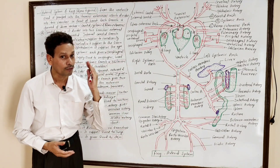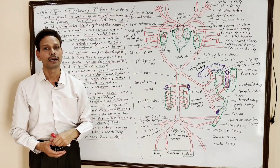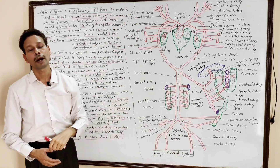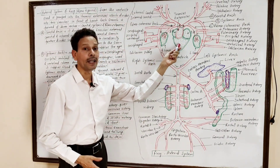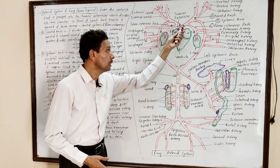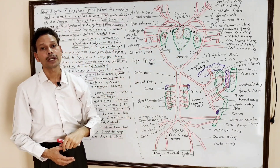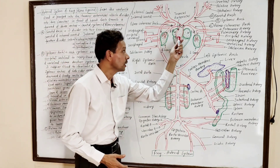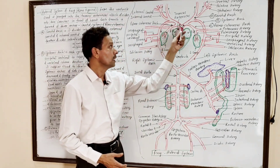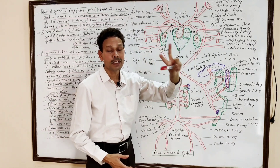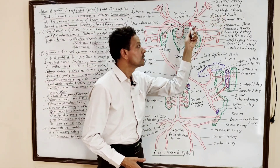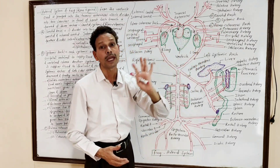In the arterial system of frog, class Amphibia, Rana tigrina, the heart pumps blood to different body parts. The ventricle undergoes constriction and its systole pumps the blood into an additional chamber called truncus arteriosus. This truncus arteriosus, in front of the heart, divides immediately into two branches, and each branch further divides into three main arcs: carotid arc, systemic arc, and pulmo-cutaneous arc.